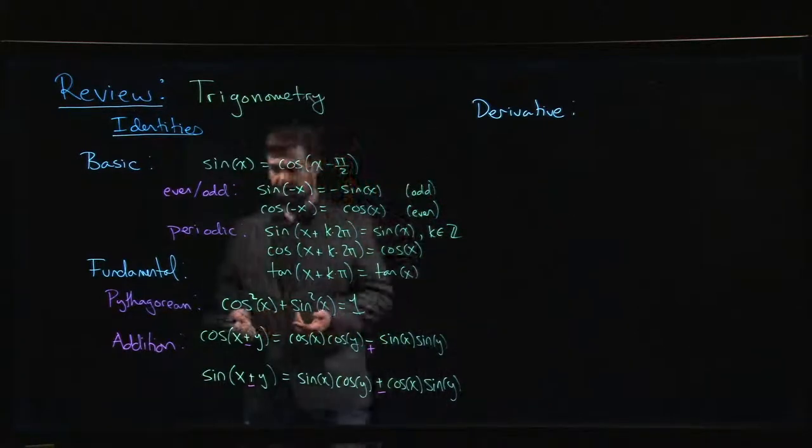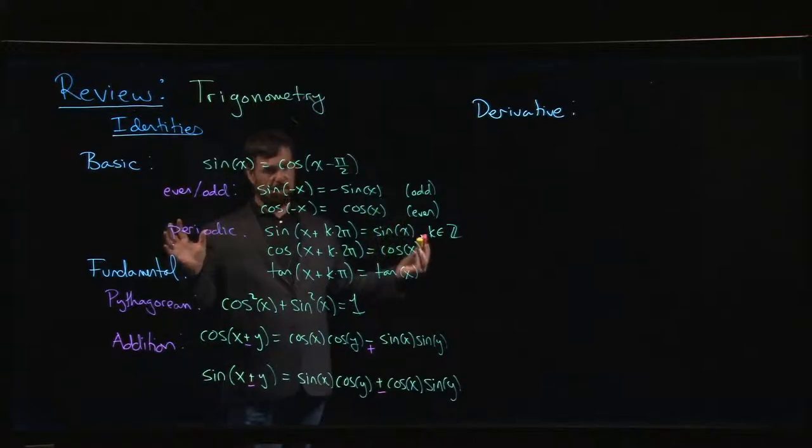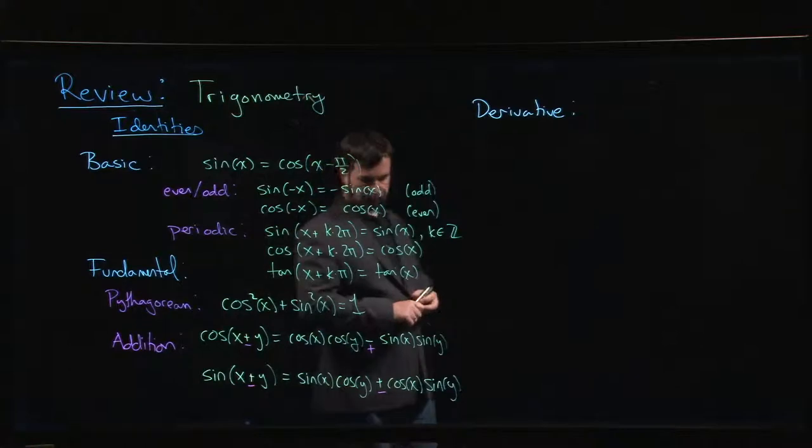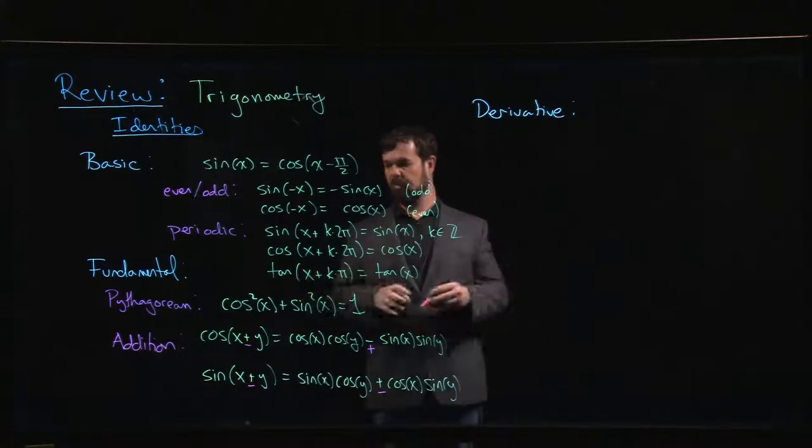You might have done a unit on this in high school, where you spend time given all sorts of different identities and you're asked to show the left-hand side equals the right-hand side. You probably won't have to do very much of that in your calculus course, but you might need to make use of identities to simplify certain problems. You might have equations with trig functions in them that you need to solve, or you're just trying to simplify things because it makes it easier to evaluate a derivative, or an integral, or something like that.